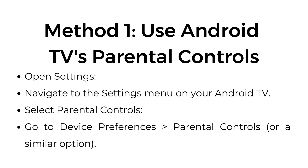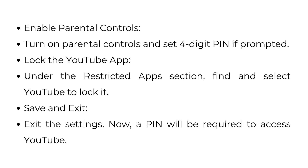Method 1: Use Android TV's parental controls. Open settings and navigate to the settings menu on your Android TV. Select parental controls — go to device preferences, parental controls, or a similar option. Enable parental controls and turn them on, setting a four-digit PIN if prompted.